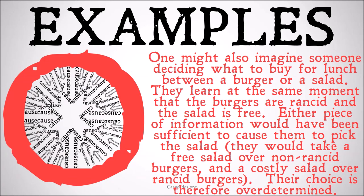You might also imagine someone deciding what to buy for lunch between a burger and a salad. They learn at the very same moment that the burgers are rancid and horrible, and that the salad is free. Either piece of information would have been sufficient to cause them to pick the salad — they would take a free salad over non-rancid burgers, and a costly salad over rancid burgers. Their choice is therefore over-determined, because there are two causes that lead to the same effect.